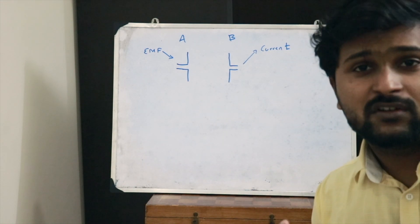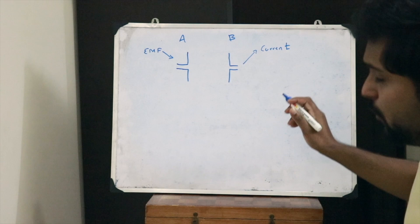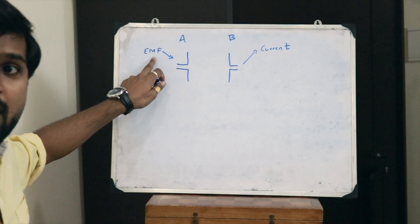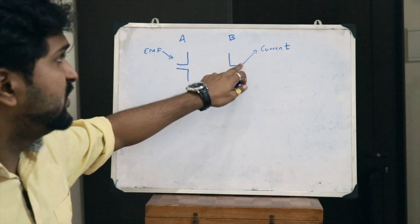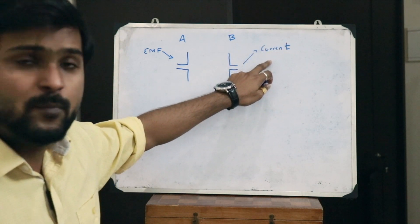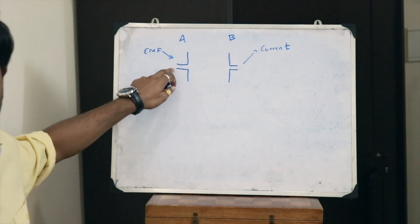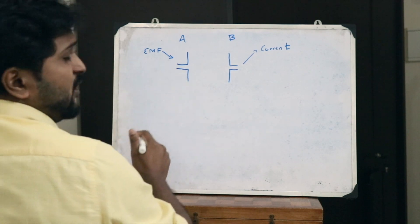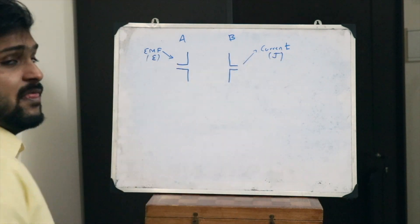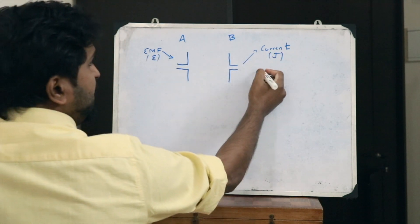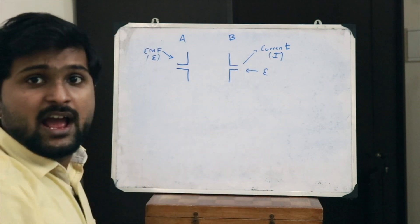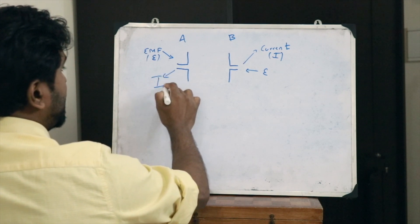So what does the reciprocity theorem state? The reciprocity theorem states that when the same EMF is applied to the second terminal, the same value of current will be obtained at the first terminal. If the value of this EMF is E and the current is I, then applying EMF E to the second terminal gives the same current I at the first terminal.